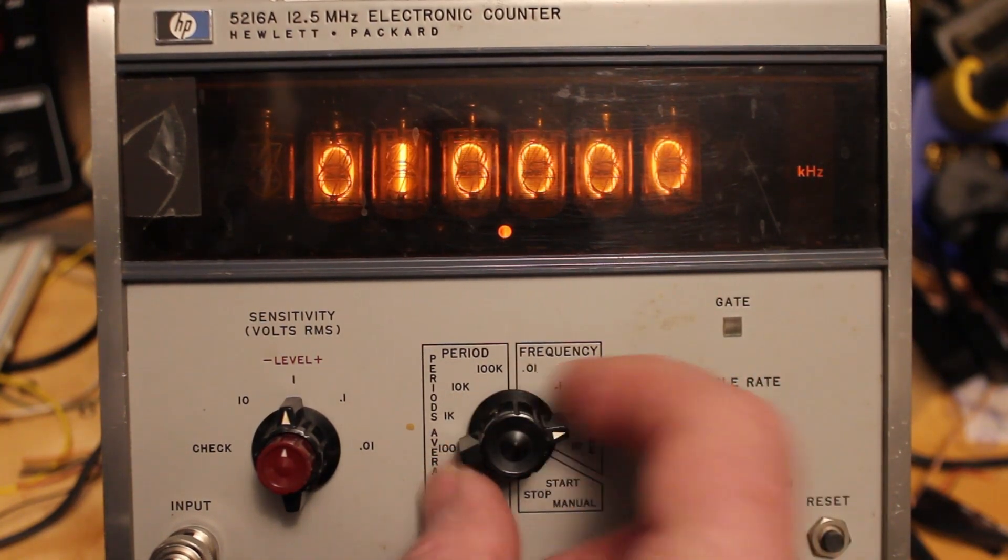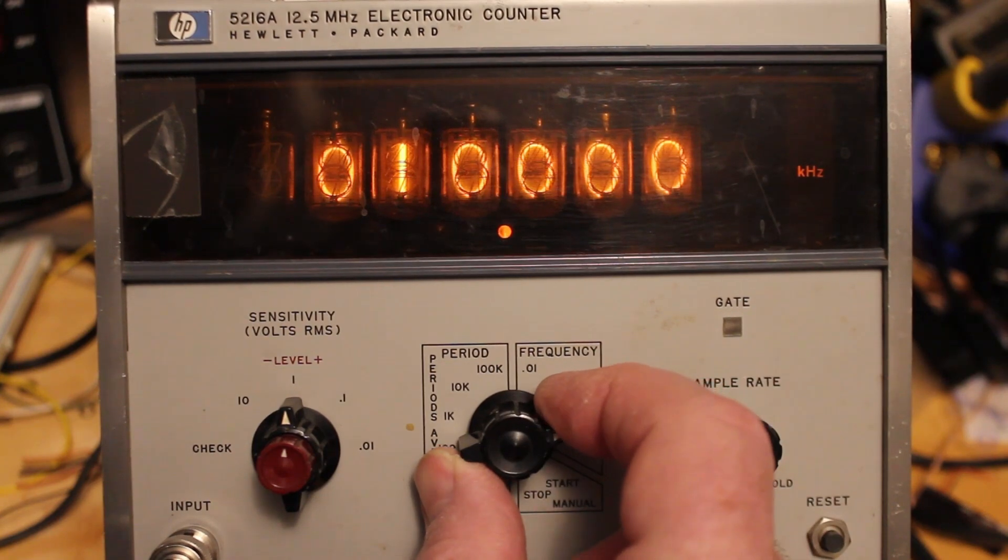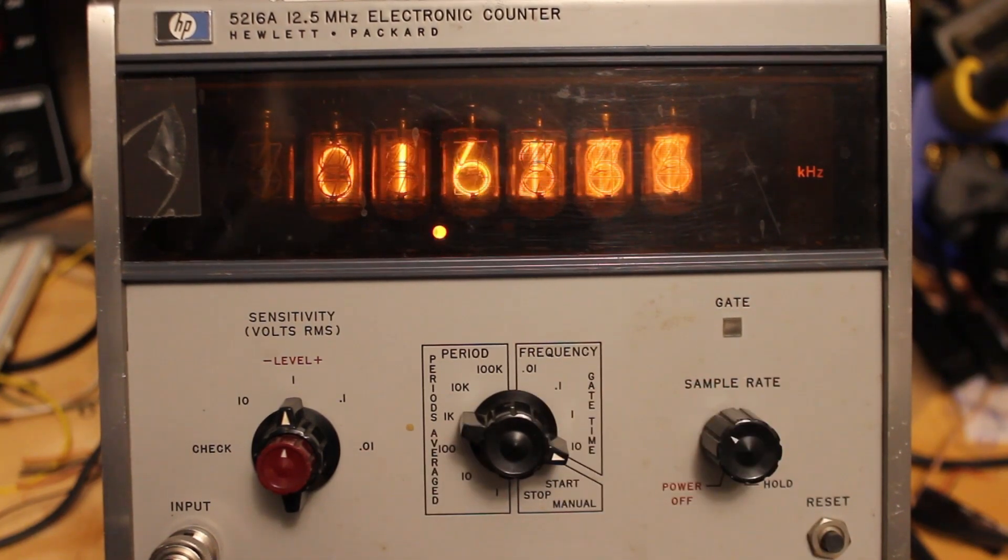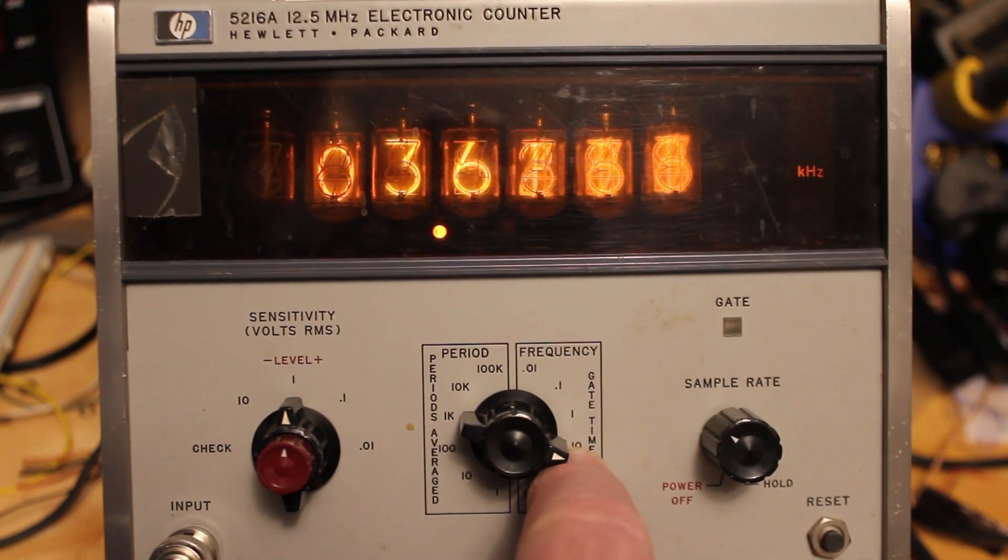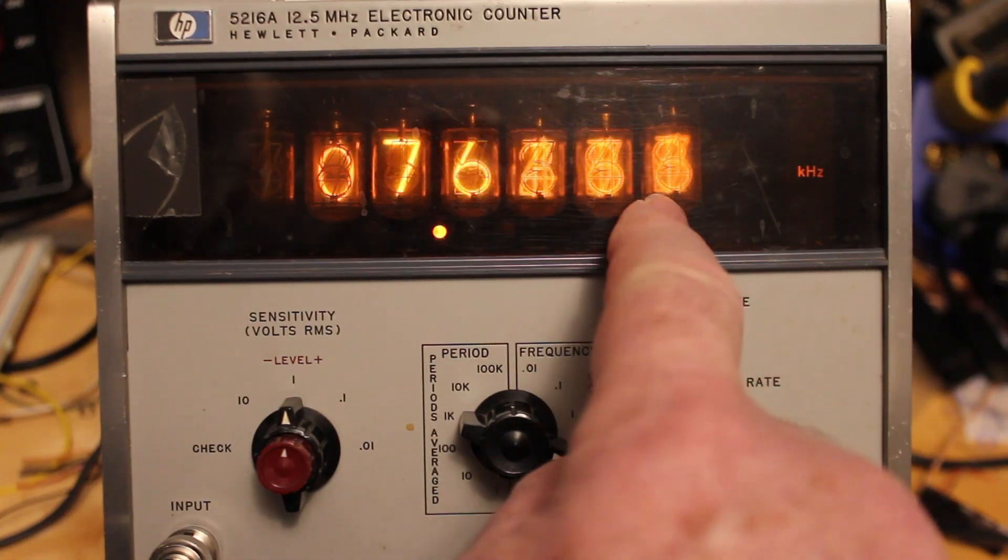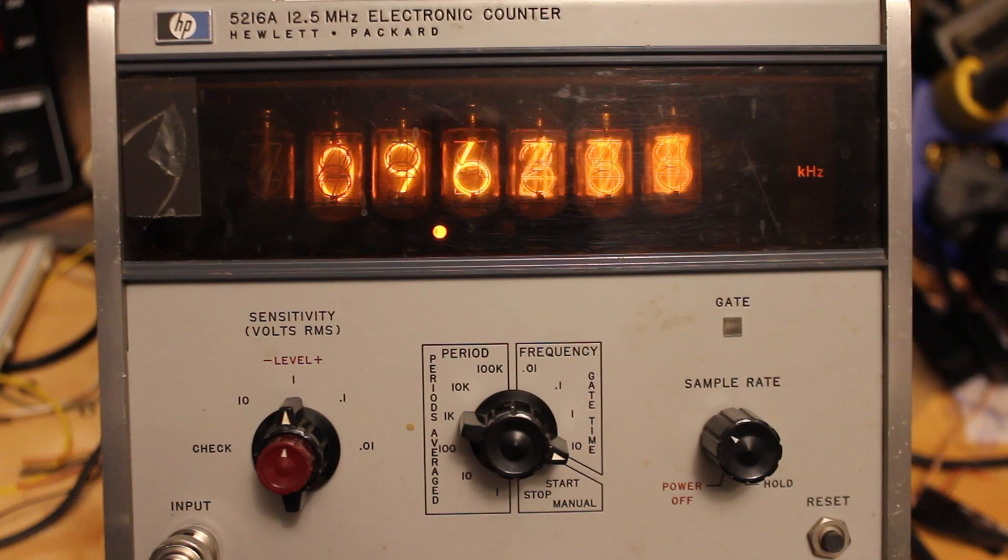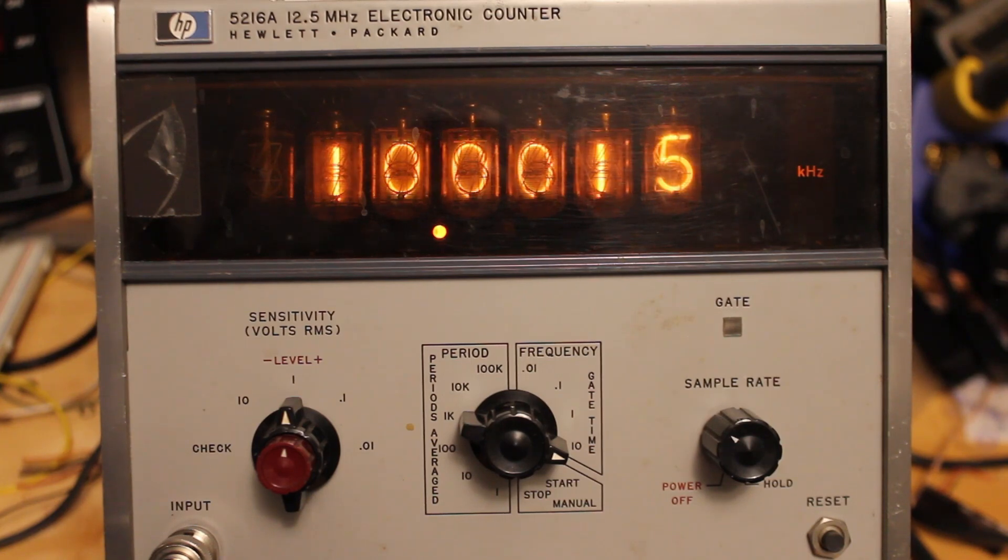Now if I want a bit more accuracy, I can turn the time base so it takes counts for 10 seconds longer. So 10 seconds—actually sorry, 10 seconds total. And it'll give us that extra decimal place over there on the end. We can see just how accurate this thing is.